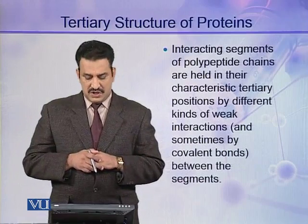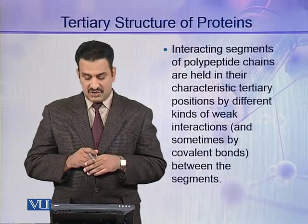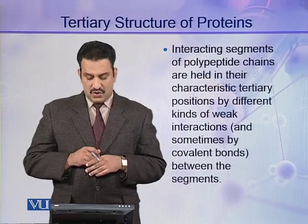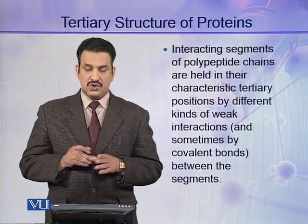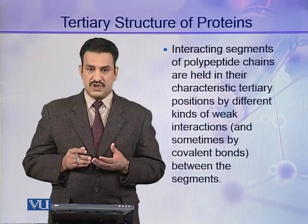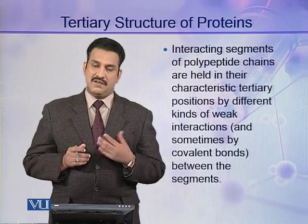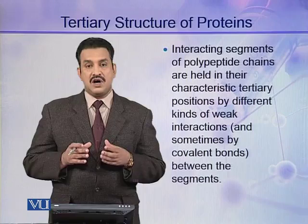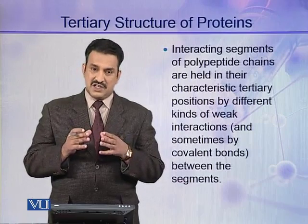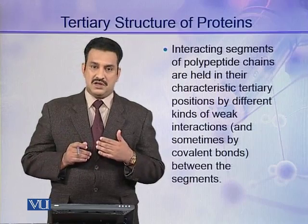Interacting segments of a polypeptide chain in a tertiary structure are held in their characteristic tertiary positions by different kinds of weak interactions, and sometimes by covalent bonds as well. This tertiary structure is a fully folded conformation, which is also a stable conformation like alpha helices and beta sheets. These segments remain in place through weak interactions as well as covalent interactions.